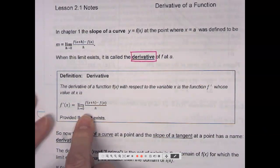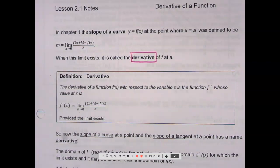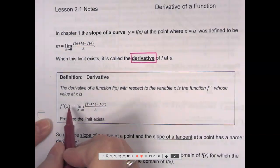Whose value at x is f prime of x is the limit as h approaches 0 of f of x plus h minus f of x over h. What's different in this? Instead of a, instead of a, it's an x. I like the x better because aren't we plugging in an x value for it anyway? So the x is just more natural to use here.